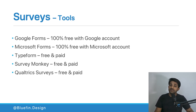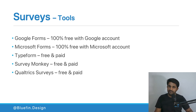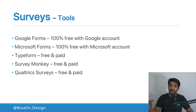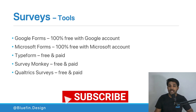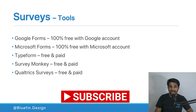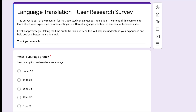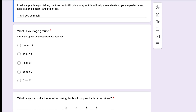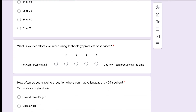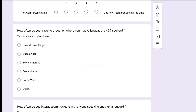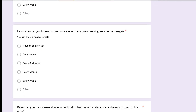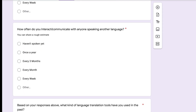Another survey tool is Qualtrics, which is similar to Typeform and SurveyMonkey and also has a free and paid account. Have you used another survey tool? Let me know in the comments — I'd like to learn from you. Now let's head to the questions I'm going to share for my language translation project. I'm using Google Forms for my survey — let's check that out.